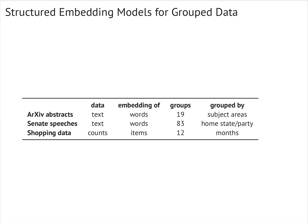We study how the word usage of US congressional speeches varies across states and party affiliation, how words are used differently across sections of the archive, and how the co-purchase patterns of groceries vary across seasons.